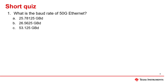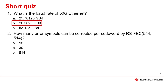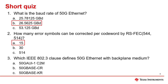Let's go through a short quiz. What is the baud rate of 50 gigabit Ethernet? The answer is 26.5625 gigabaud. How many error symbols can be corrected per codeword by RSFEC with n equals 544 and k equals 514? The answer is 15 symbols. Which IEEE 802.3 clause defines 50 gigabit Ethernet with a backplane medium? The answer is 50G Base KR.